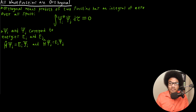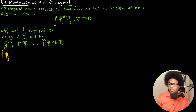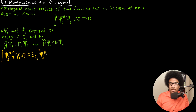For both of these equations, I'm going to multiply by the other wave function. For the ψ_i equation, I'm going to multiply on both sides by the complex conjugate of ψ_j and integrate over all space. So we have ψ_j*, H-hat acting on ψ_i, integrated over all space. Since the energy eigenvalue is just a real number, we can take it out of the integral, giving us E_i times the integral of ψ_j* times ψ_i over all space.